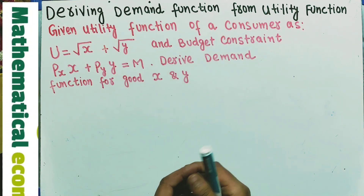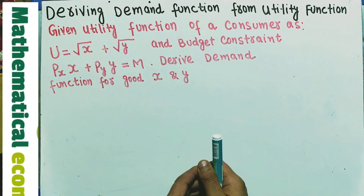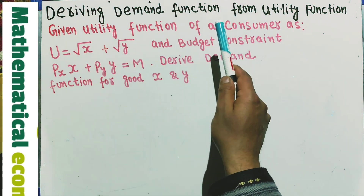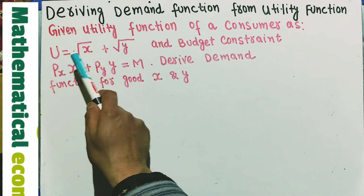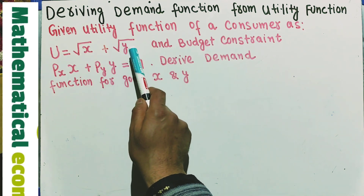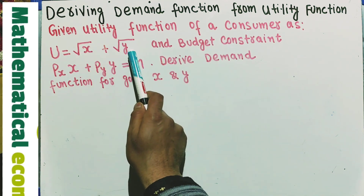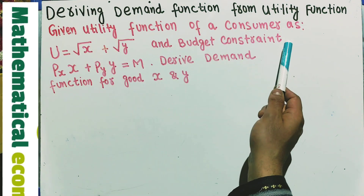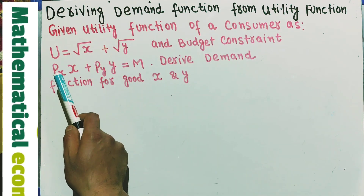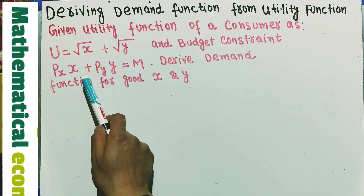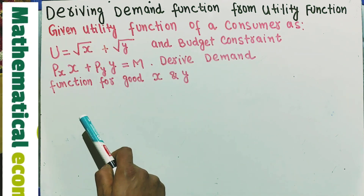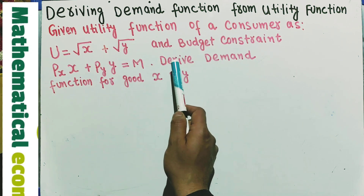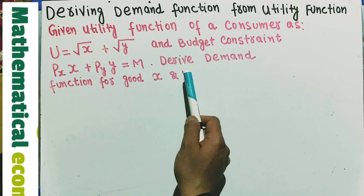In this video we will learn how to derive a demand function from a given utility function. The question is: the utility function of a consumer is U = √x + √y, where x and y are the two goods and U denotes the utility derived from these two goods. The budget constraint is Px·x + Py·y = M, the total income of the consumer. We need to derive the demand function for good x and good y.